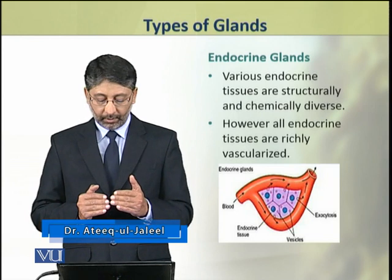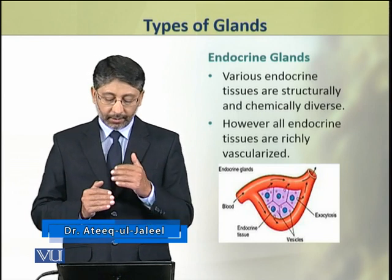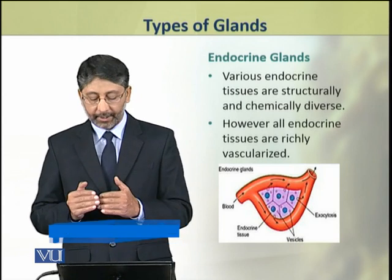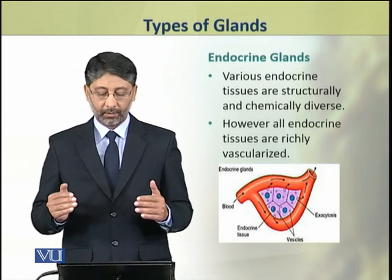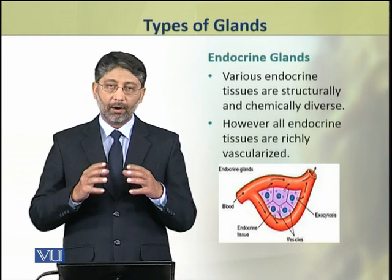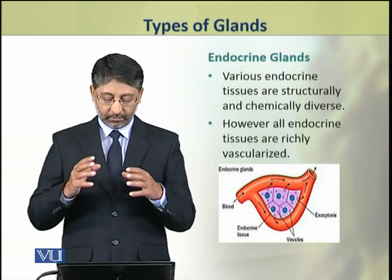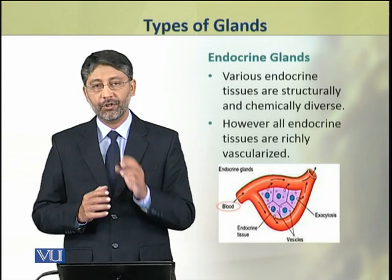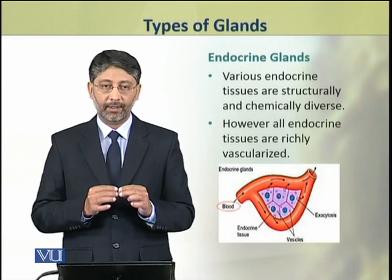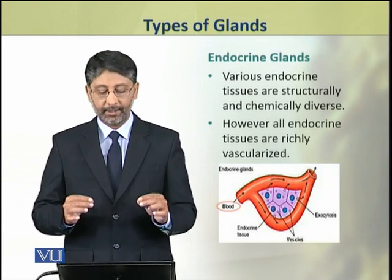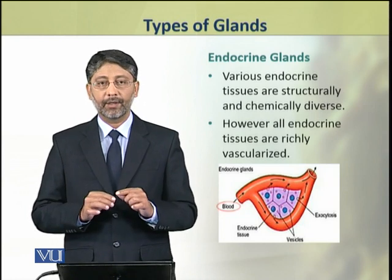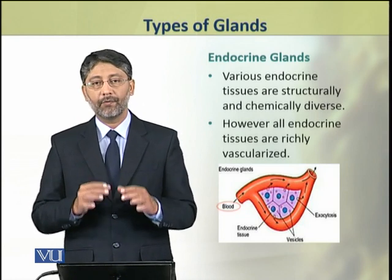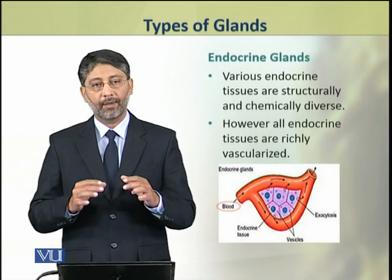The endocrine glands are structurally and chemically diverse. However, all endocrine tissues have one common feature: they are highly vascularized, i.e., they are richly supplied with blood capillaries and vessels.